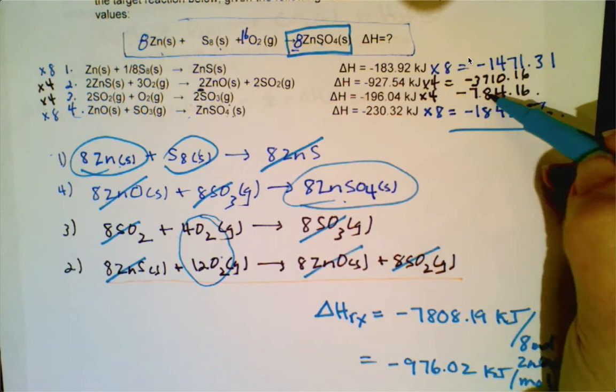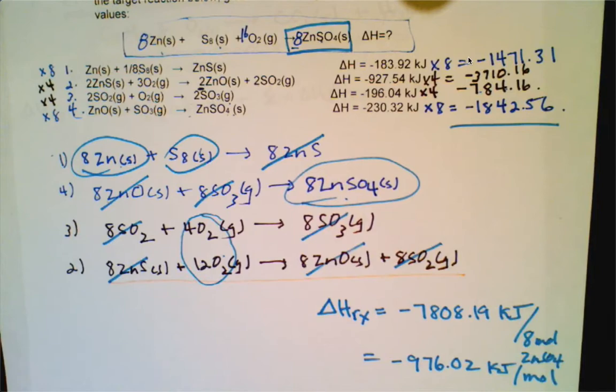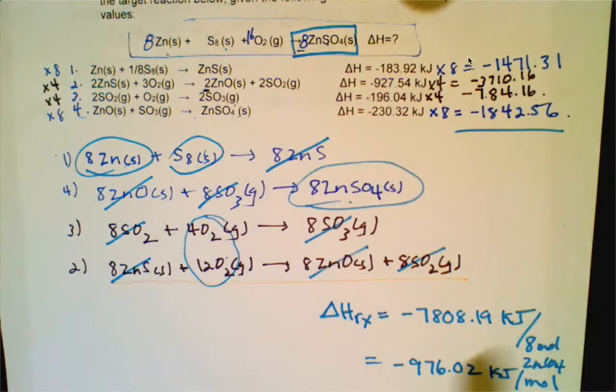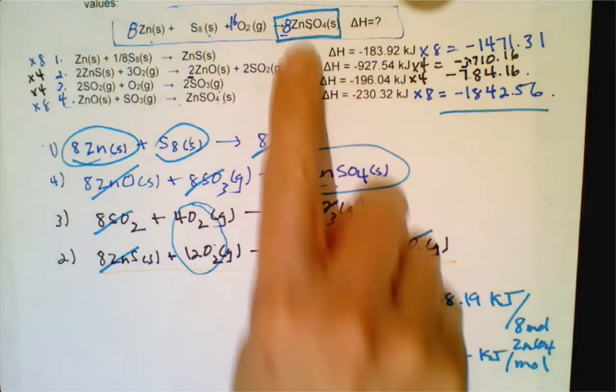When dealing with these types of reactions, it's sometimes easier to balance with whole numbers so that in the end you can just divide your answer by the coefficient to get it down to per mole. So that's Hess's Law.